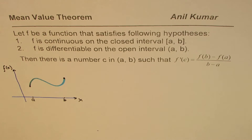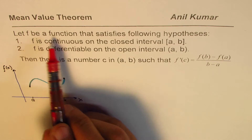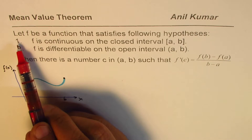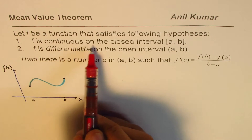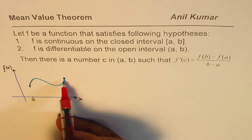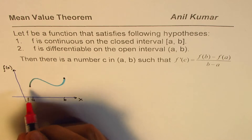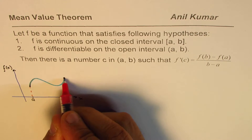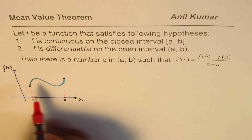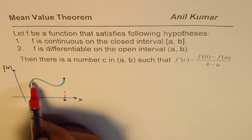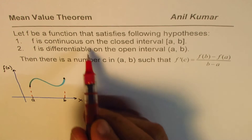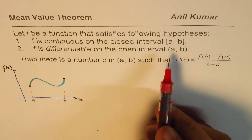Let f be a function that satisfies the following hypotheses: first, f is continuous on the closed interval [a, b] — we've taken a function which is continuous within this interval from a to b. Second, f is differentiable on the open interval (a, b), meaning it's a smooth curve with no cusps, corners, or discontinuities in between.